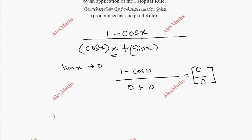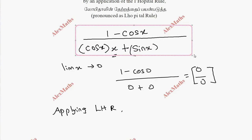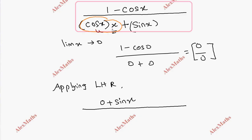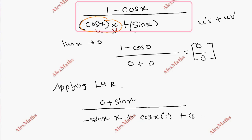We apply L'Hôpital's rule again. The numerator 1 - cos x differentiates to sin x. For the denominator, we use the uv method again on (x·cos x + sin x). Differentiating: d/dx gives -x·sin x + cos x + cos x, which simplifies to -x·sin x + 2cos x.